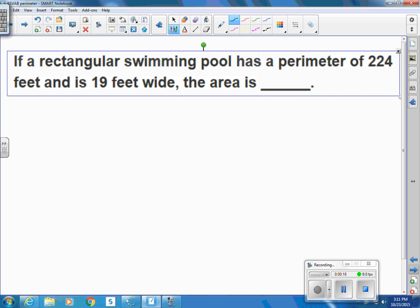If a rectangular swimming pool has a perimeter of 224 feet and is 19 feet wide, the area is...